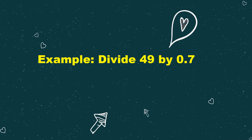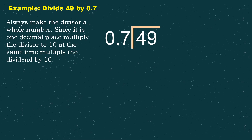Let's try this. Divide 49 by 0.7. To divide 49 by 0.7, always make the divisor a whole number. In this case, our divisor is 0.7. Since it is one decimal place, we need to multiply the divisor by 10. At the same time, we also need to multiply the dividend, which is 49, by 10. Or we can just simply move the decimal point until the divisor becomes a whole number.